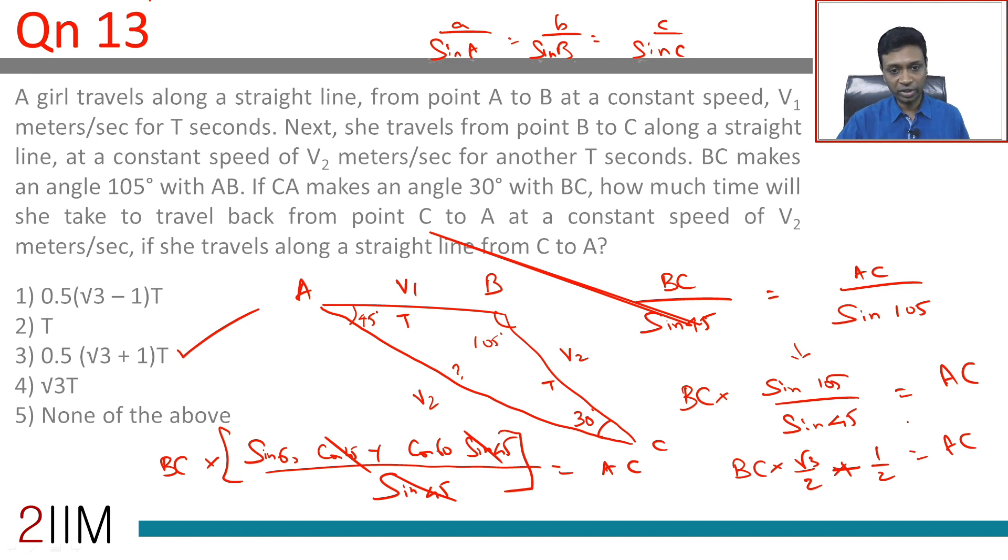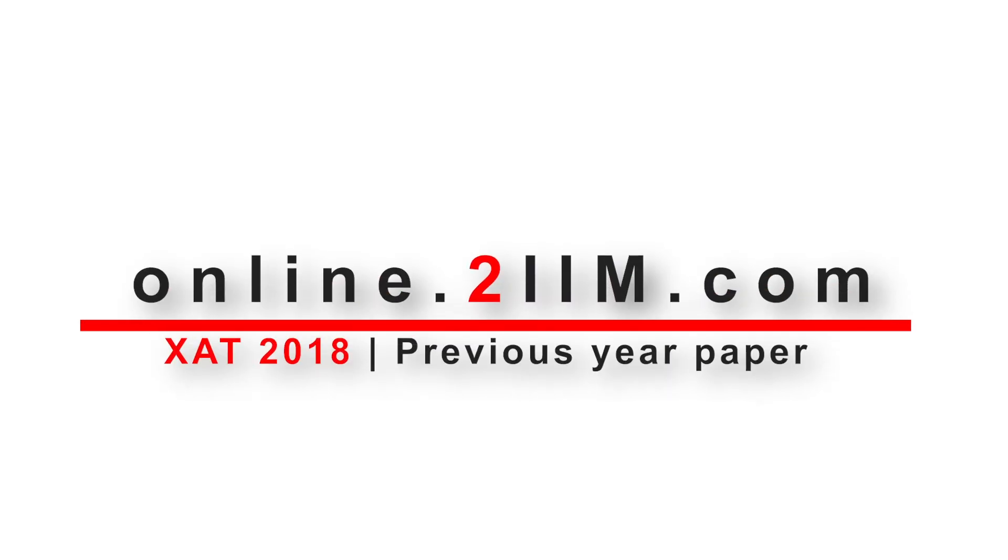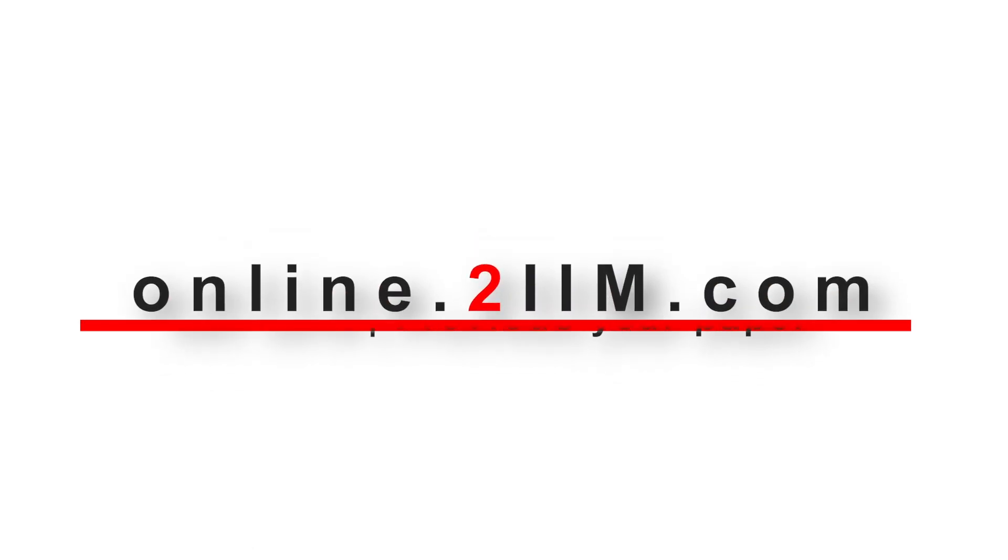That's a simple application of sin rule. Once you get this sense that this is a triangle where all three angles are known, the moment you have a triangle where all three angles are known and you know the angles to be your friendly 30, 45, 60s, 90s, then plug in sine rule and get through. Thank you.